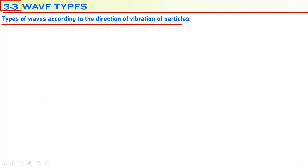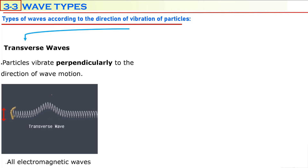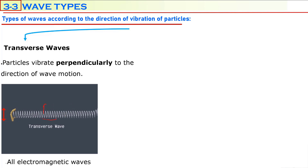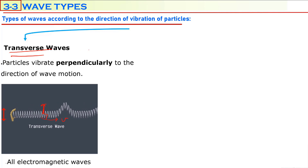Waves can also be classified according to the direction of vibration of the particles. Some waves have particles that vibrate perpendicularly to the direction of wave motion — for example, particles vibrating up and down while the wave travels horizontally. Since vibration is vertical and wave motion is horizontal, they are perpendicular to each other. These types of waves are called transverse waves. All electromagnetic waves are transverse waves.